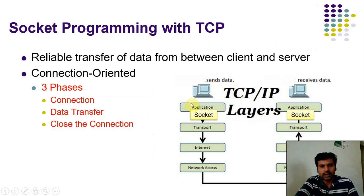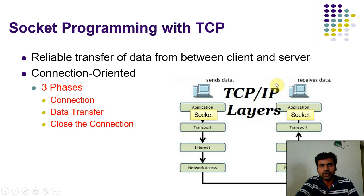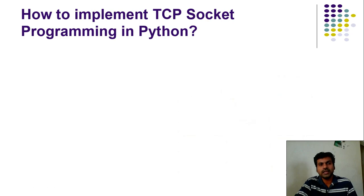In the TCP socket programming model, there is an application layer followed by a transport layer. In the transport layer there is the TCP protocol which sends and receives data. Before sending and receiving data we have to create a socket and bind it with an IP address and port number in order to make the application send the data.